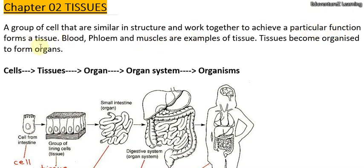Tissues are a group of cells. Tissues become organized to form organs. So here is the process: cells form tissues, many tissues form an organ, many organs together form an organ system, and lots of organ systems together form organisms like human beings or animals.